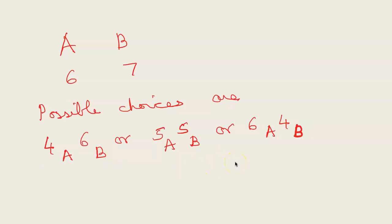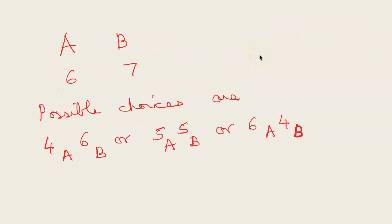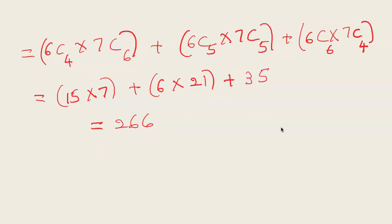So that is 6C4 into 7C6. 5 courses can be selected from 6 courses in 6C5 into 7C5 plus 6C6 into 7C4. So that would give you 266 as the answer.